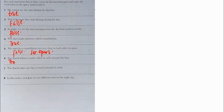Number five: The stars in a constellation are very close to each other in space. This is false. The stars in the constellation are far apart in space. Number six: The earth follows a path called its orbit around the sun. This is true. Number seven: The earth takes one day to travel around its orbit. This is false; it takes one year to travel on its orbit. Number eight: In December and June we see different stars in the night sky. This is true because the earth is moving and orbiting the sun and we can see different stars in space.